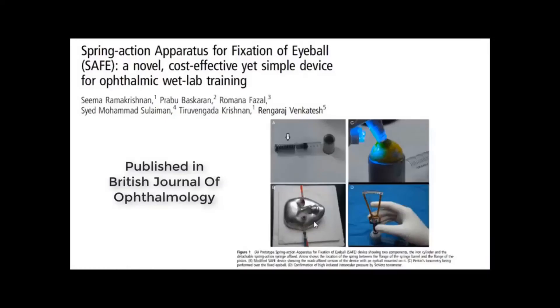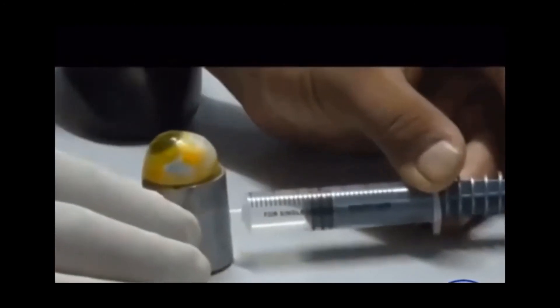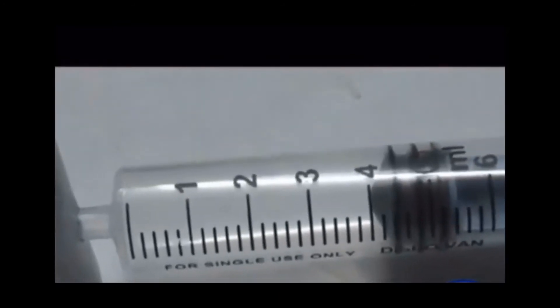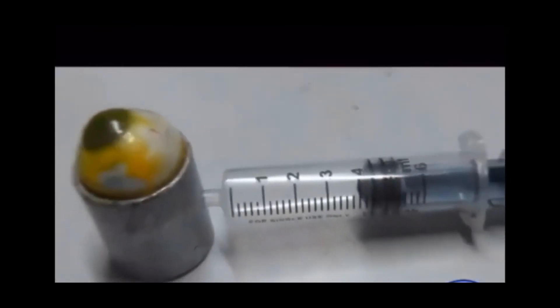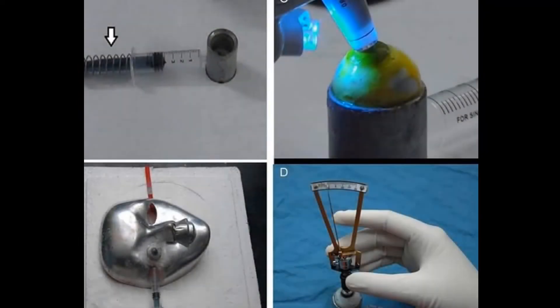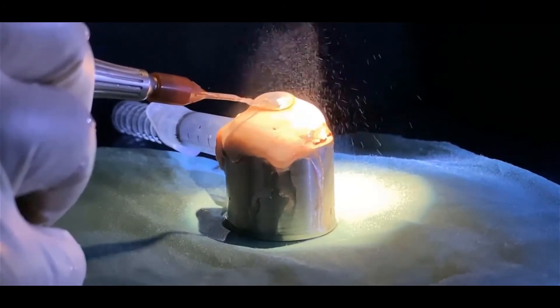Safe Spring action apparatus for fixation of eyeball is a robust, simple, and economical device to solve the problem of achieving a formed and firm eyeball which is stably fixed in a holding device in surgical wet lab training. The spring action syringe generates vacuum and enables reliable fixation of human and animal cadaveric eye on the iron cylinder. The rise in intraocular pressure due to vacuum fixation can be varied as per need or nature of surgery.